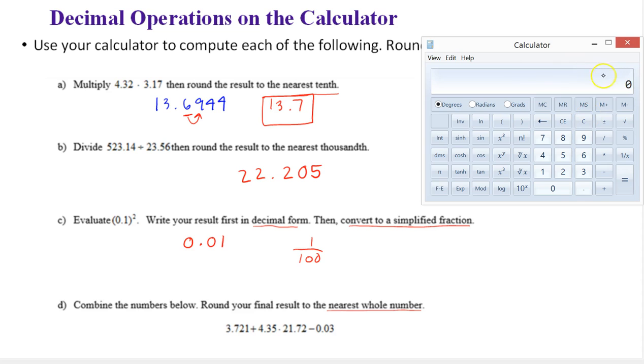So most calculators keep track of what you're doing on top so you can look at it, which is helpful. 3.721 plus 4.35. Now there's a times, times is asterisk, times 21.72 minus 0.03.